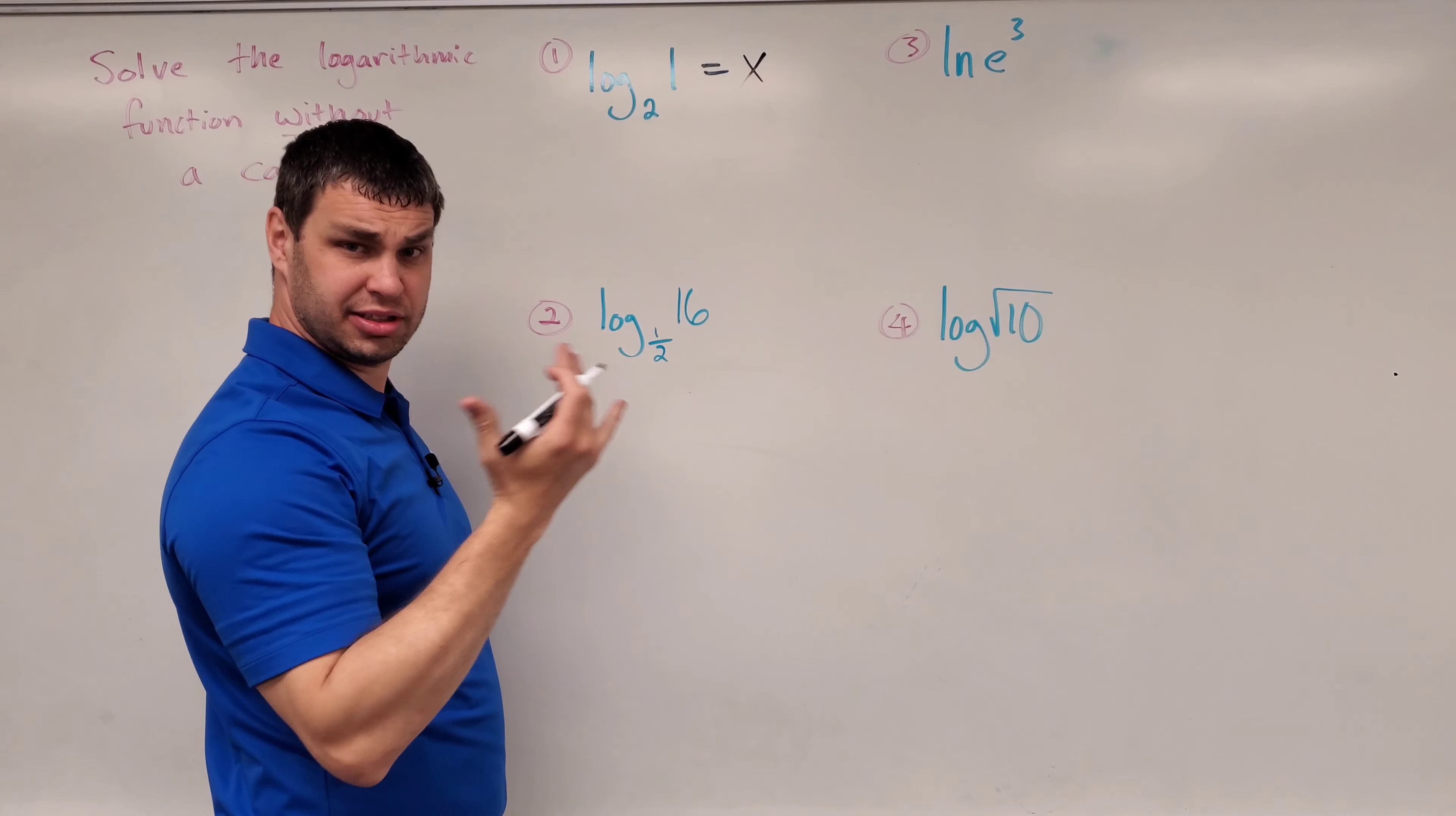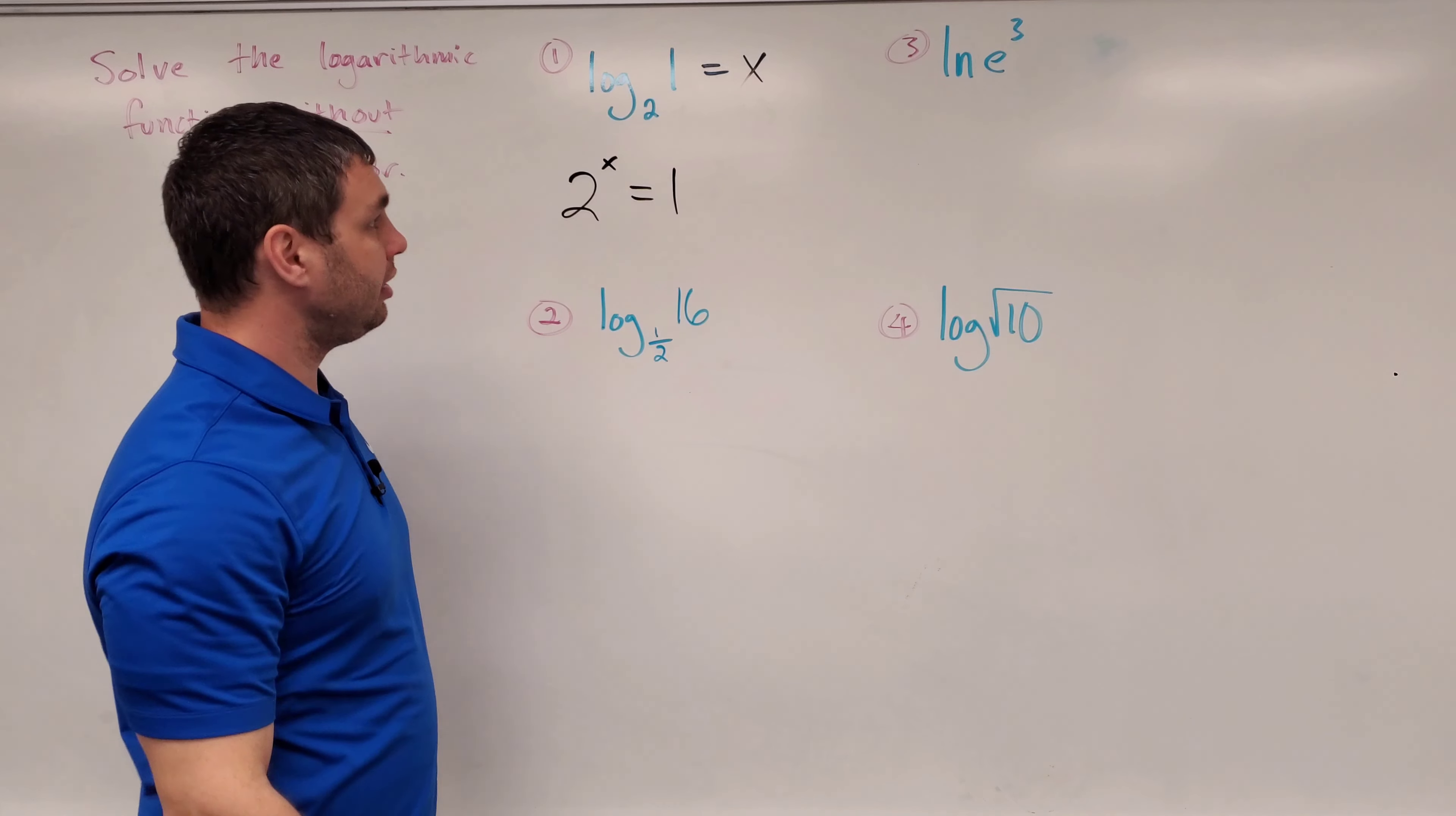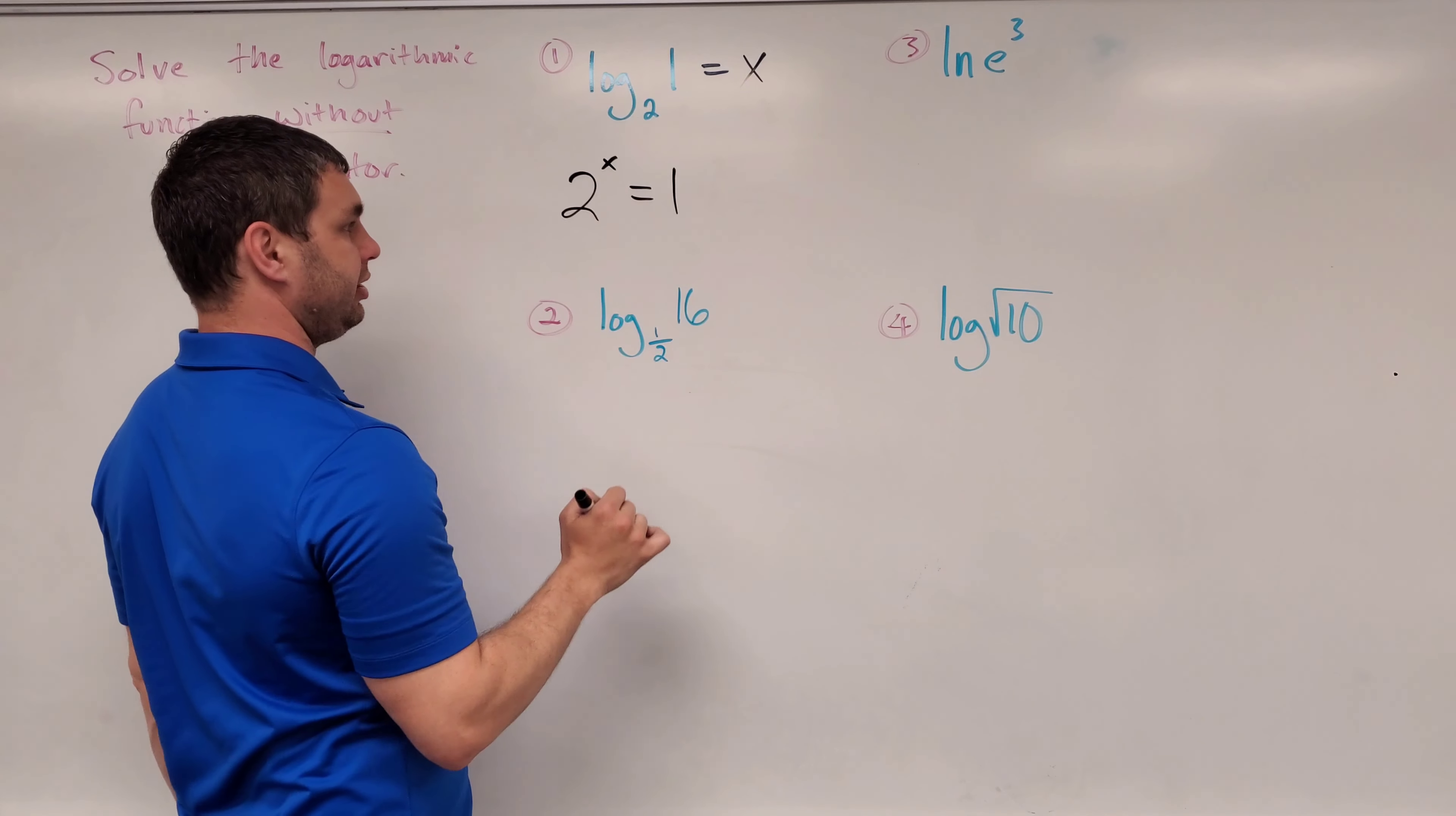We can use our properties that we figured out in our last video, link up there if you need it, where I have the base of my logarithm. Set it raised to the other side x equals 1. And then what I can do here is try to find the same base to use for both the left and the right side to help me solve the exponents. In this case, I think 2 is going to be a good base to use.